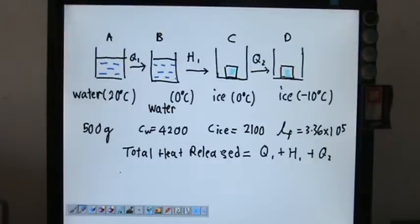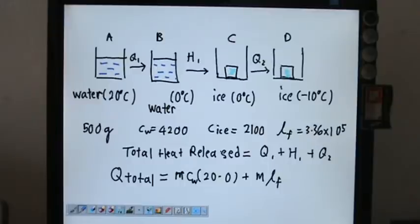We can write this total heat as—we can factorize the M actually. This is MC theta, what kind of theta is this? 20 minus 0, and this is water. And then H is actually ML, so Lf, the latent heat of fusion of ice.